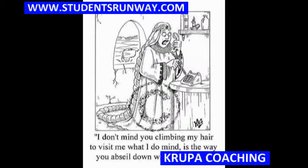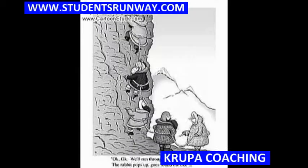Abseil simply means a descent of a vertical cliff or a wall made by using a double rope that is fixed to a higher point and wrapped around the body. So abseil means to come down, to rappel — rope down, R-A-P-P-E-L.